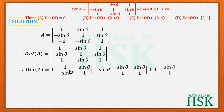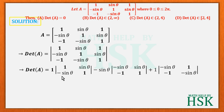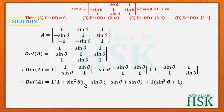Expanding along the first row: the first term is 1 times the 2×2 determinant of (1, sin θ; −sin θ, 1), which gives 1 + sin²θ. The second term is −sin θ times the determinant of (−sin θ, sin θ; −1, 1), giving −sin θ times (−sin θ + sin θ) = 0. The third term involves the remaining 2×2 minor.